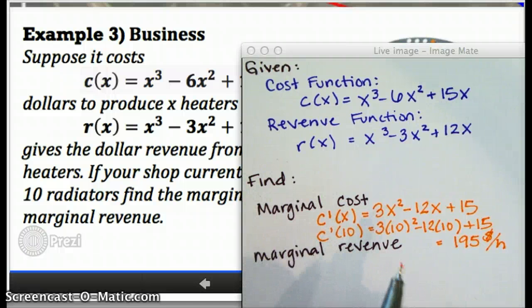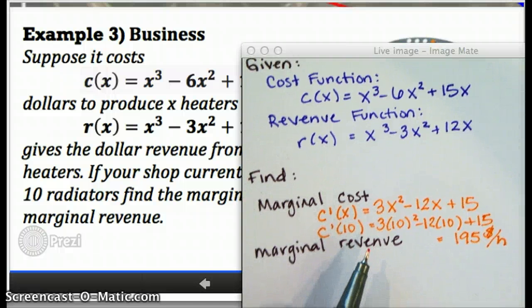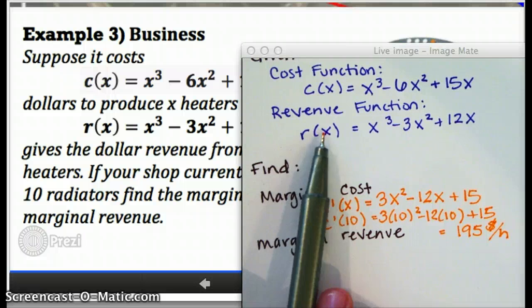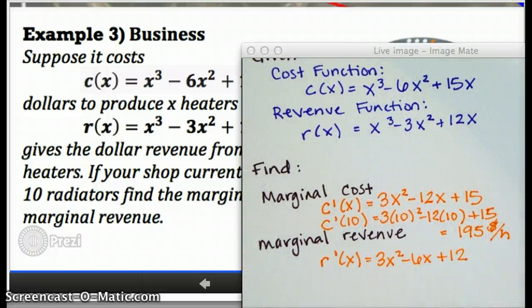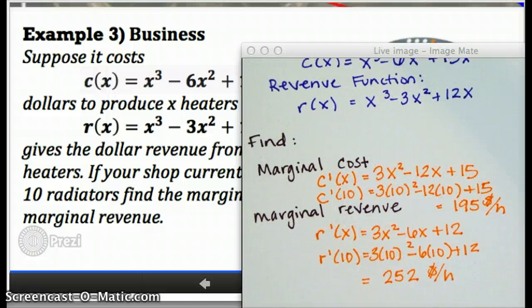We'll compare that to the marginal revenue. Marginal revenue is the change in revenue. In other words, the derivative of the revenue function, which looks like this. And then we plug in 10. And I get $252, which is how much money I could make from selling that 11th radiator, based on the demand for radiators.